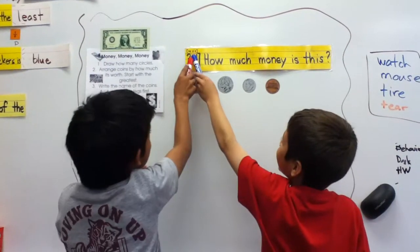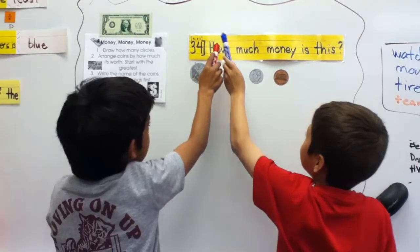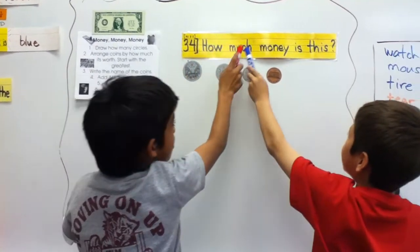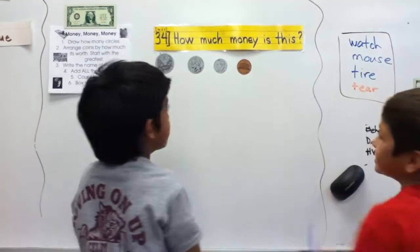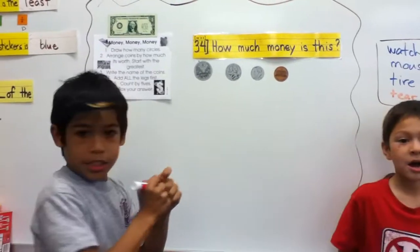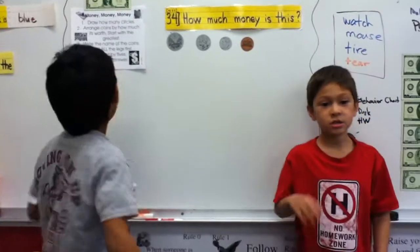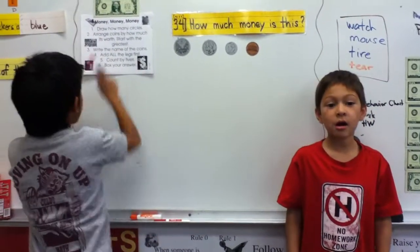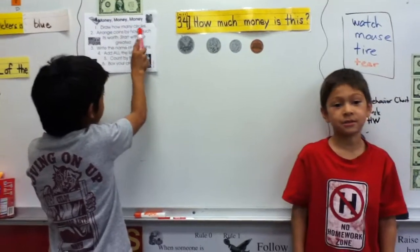N is 5.2. How much money is this? Step 1: Draw how many circles.